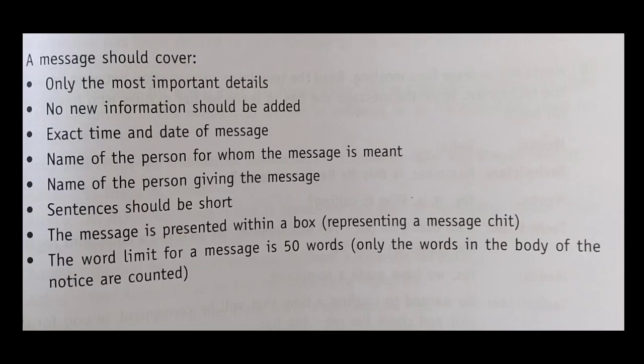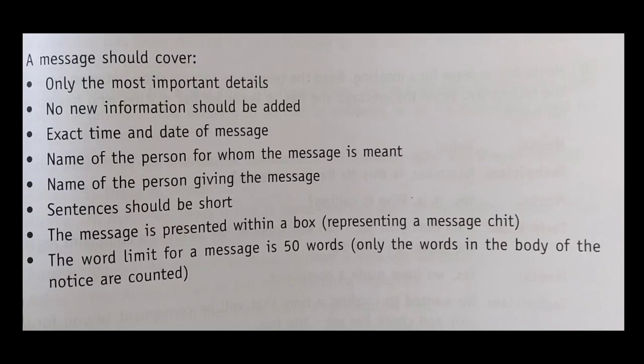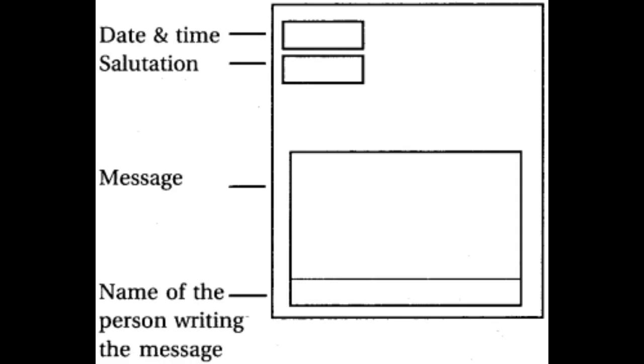Now let's see the skeleton — that is, the format — of message writing. The message must be written inside a box. The first element is the date and time, written near the margin. Then the salutation, followed by the body of the message. Finally, the name of the person writing the message — that is the signature — goes at the last.